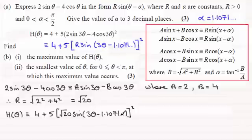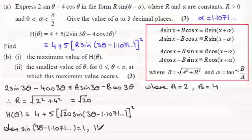And so therefore we need to consider when sine of 3 theta minus 1.1071 and so on is 1. And this is going to give us our maximum value for h. And that maximum value then will be the 4 here. And then it's going to be plus. And the sine function here is 1. So we just get the root of 20 squared.